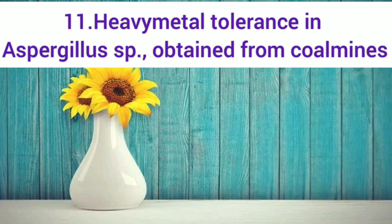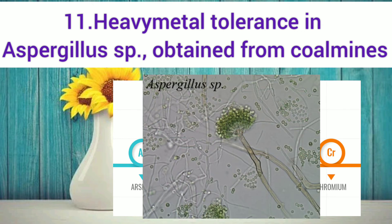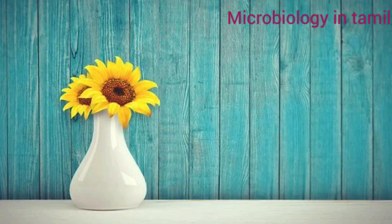The next topic is: Heavy Metal Tolerance in Aspergillus Species Obtained from Coal Mines. For heavy metals, examples include arsenic, lead, mercury, cadmium, copper, and chromium — these are all in the heavy metal category. This project studies how Aspergillus species can tolerate these heavy metals.